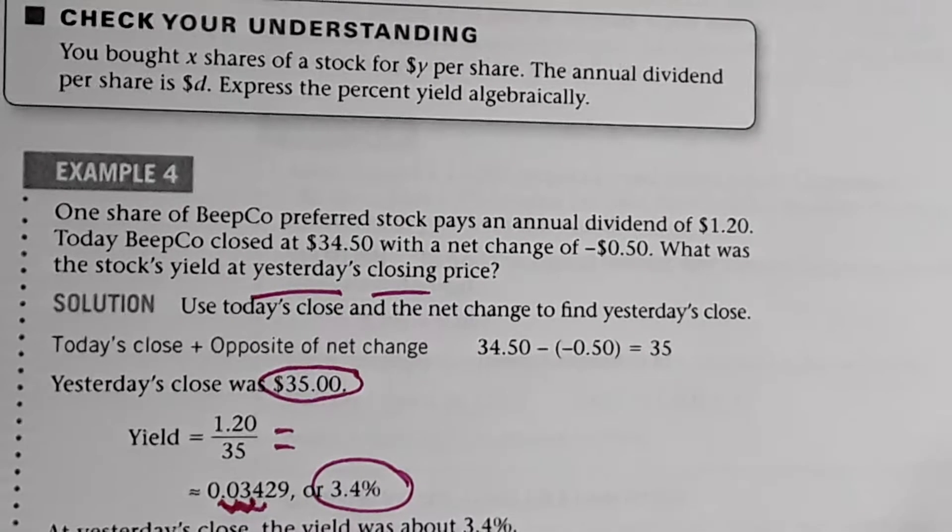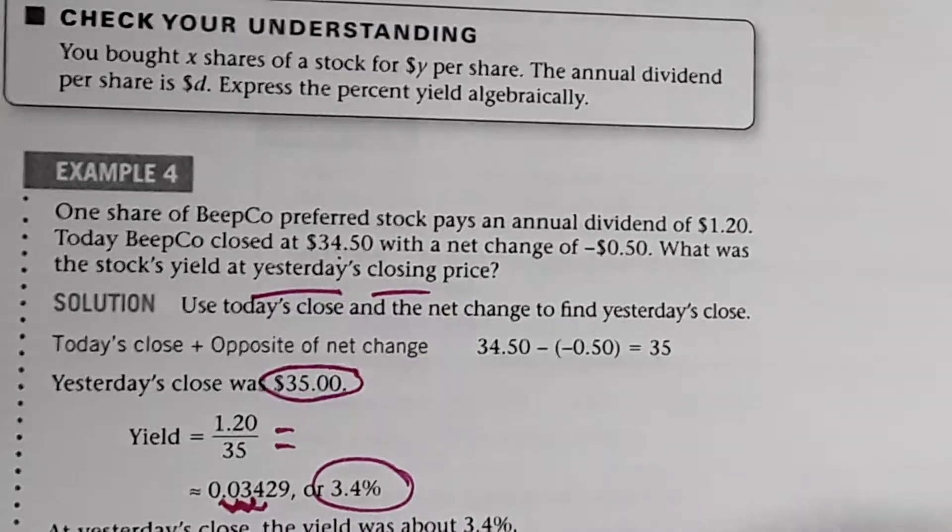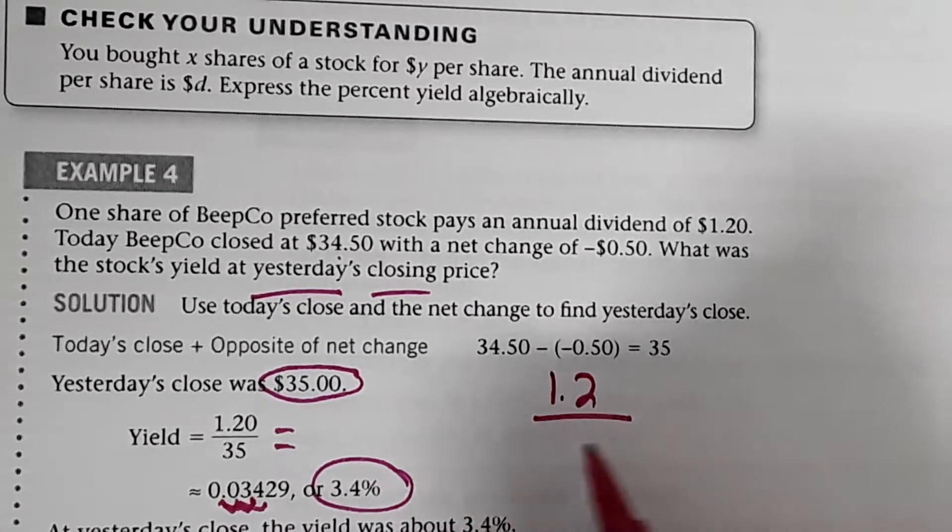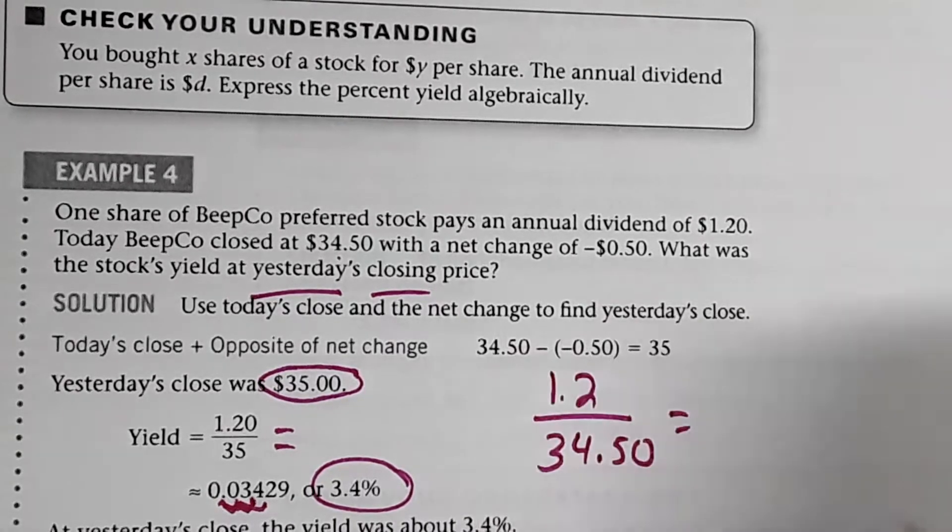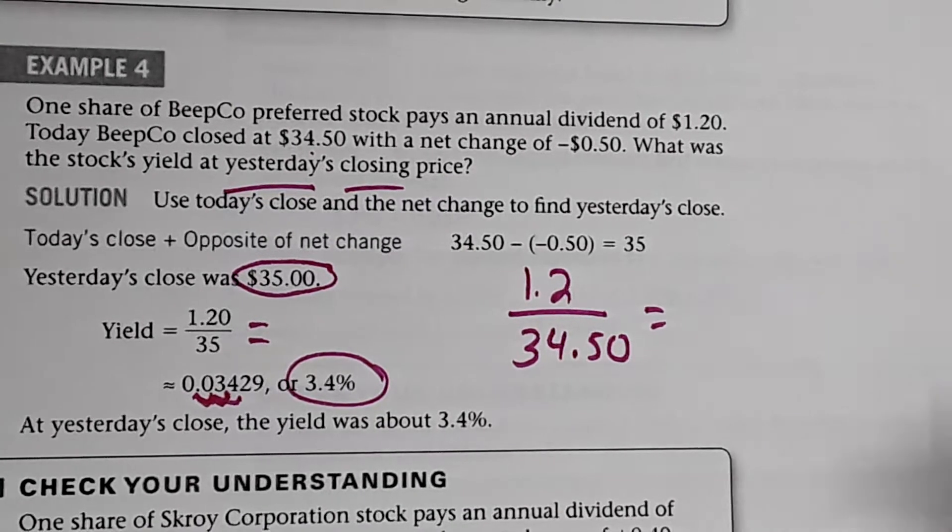The yield today would be different because we would use $34.50. So to find the yield today, I would do $1.20 divided by $34.50. So pause the video if you'd like and see if you can find the yield for today's close.